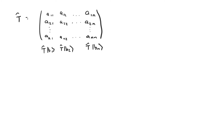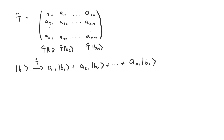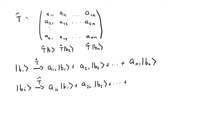So that means that the basis vector b1 is transformed into the vector a11*b1 plus a21*b2, all the way up to an1*bn. And in general, the basis vector bi is transformed into the vector a1i*b1 plus a2i*b2, all the way up to ani*bn.